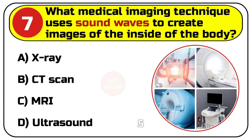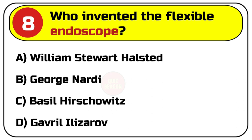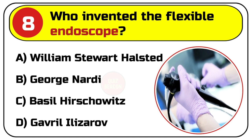Correct answer is D. Ultrasound. Question number 8. Who invented the flexible endoscope? Options are: A. William Stuart Halstead, B. George Nardy, C. Basil Haskowitz.